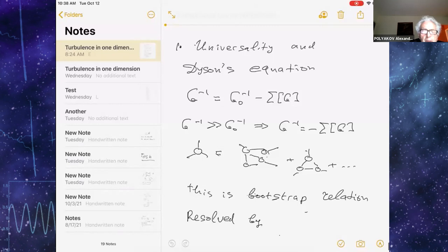If we look at the Dyson's equations, then it contains bare Green function and physical Green function. Sigma here is the self-energy part.